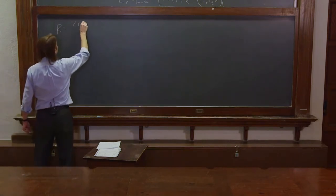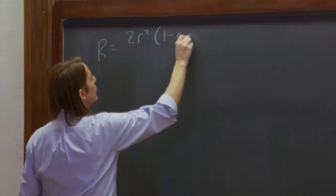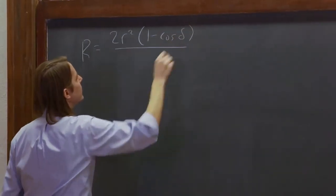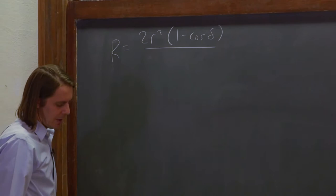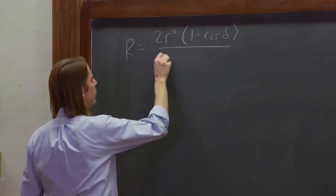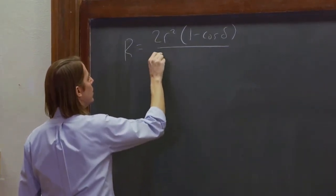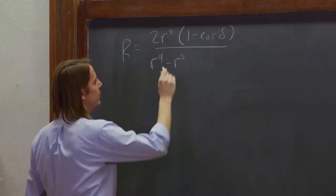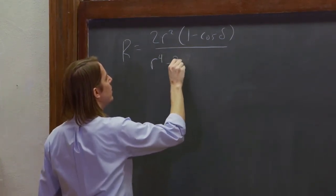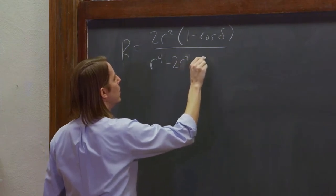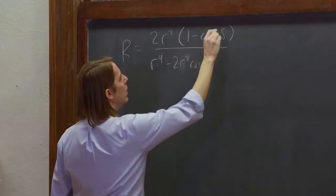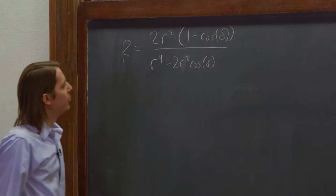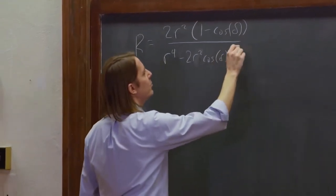R squared, let's write it again: 2R²(1 - cos δ), that is, pulled the 2 out, why not, over R⁴ - 2R² cos δ, or minus 2R² cos δ, plus 1, of course, just to complicate things, plus 1.